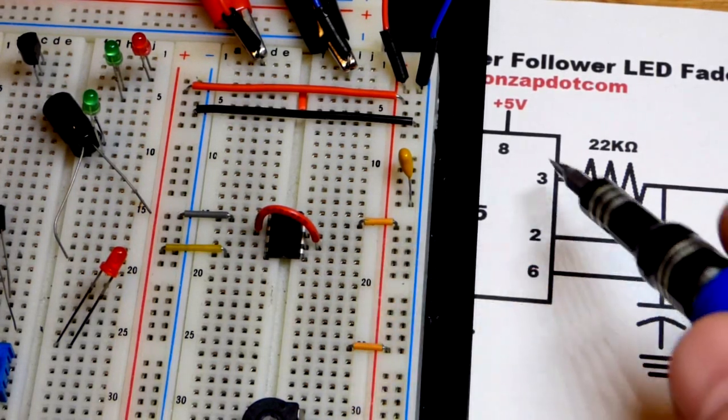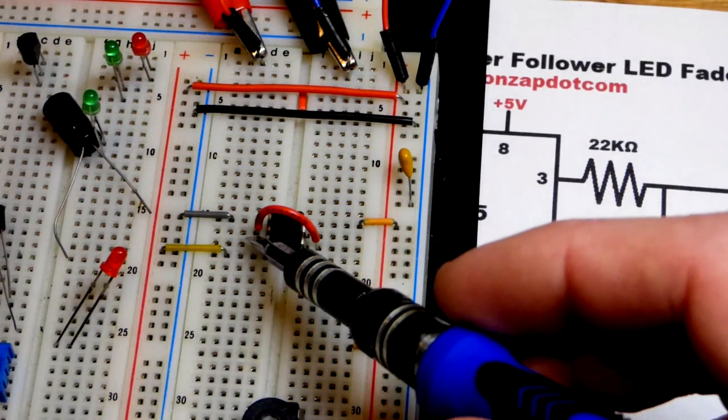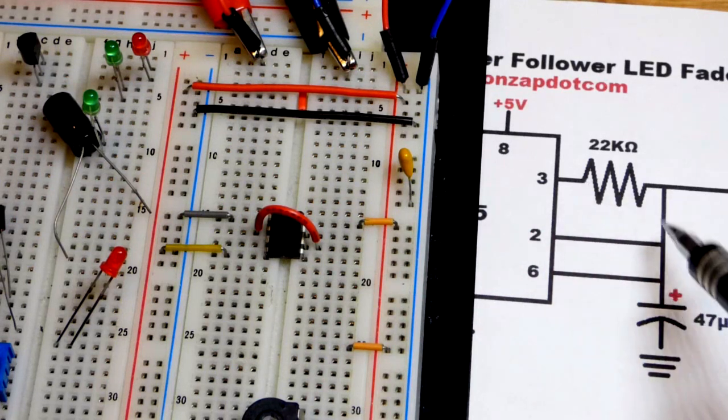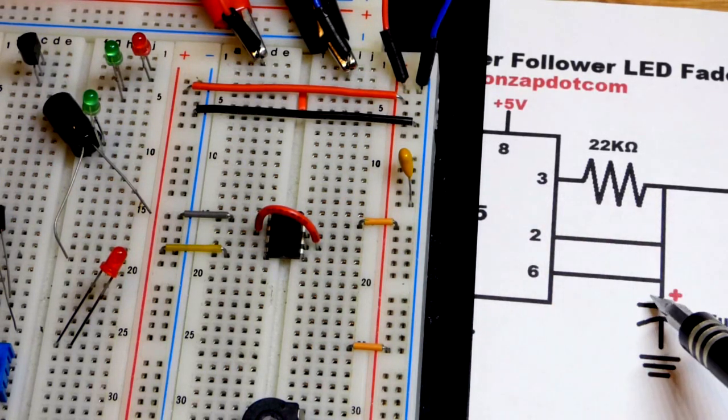The capacitor will be charging and discharging. Once the capacitor gets up to two-thirds of the power supply voltage, the output will be set low.